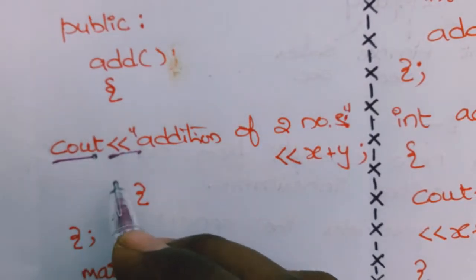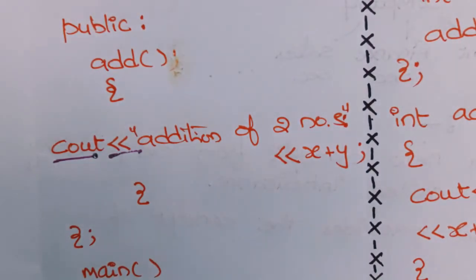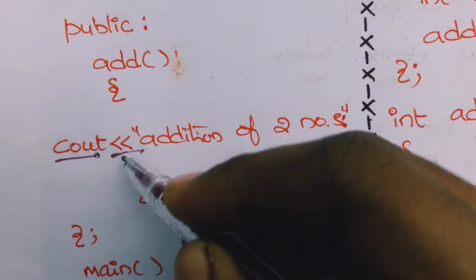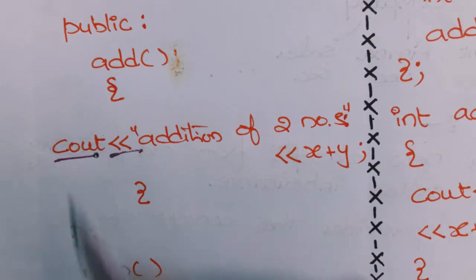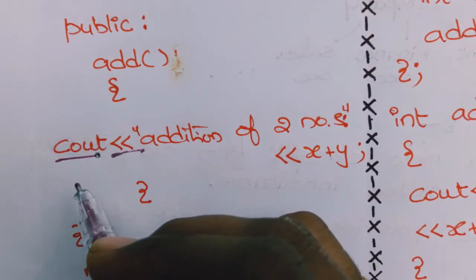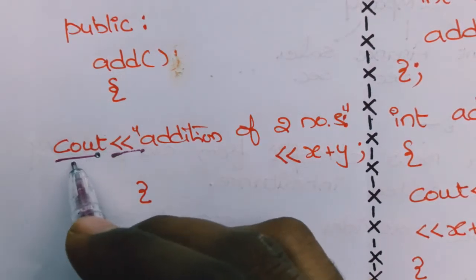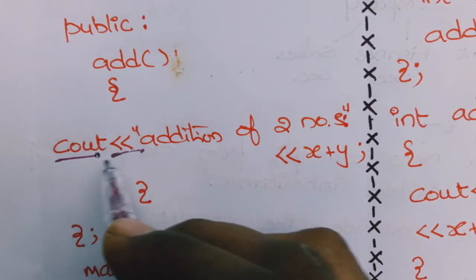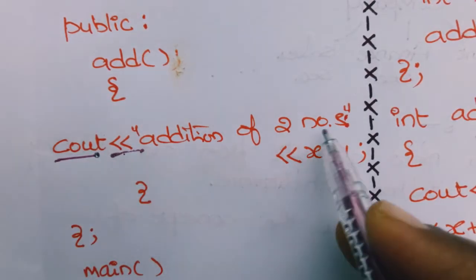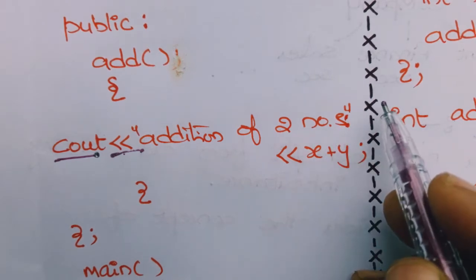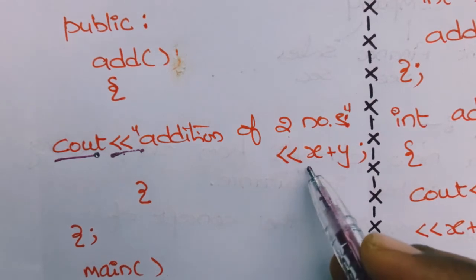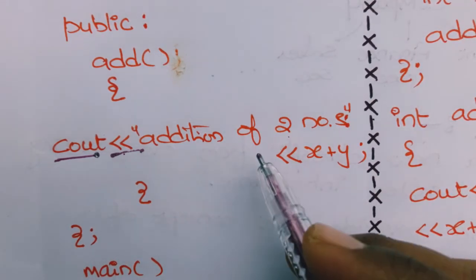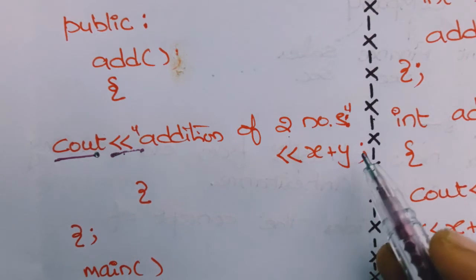Next, cout — if you want to print anything on the output screen in C++, you use cout followed by the insertion operator. Within double quotes, write whatever you want to print: 'Addition of two numbers'. Then again the insertion operator.